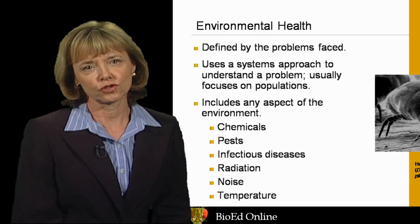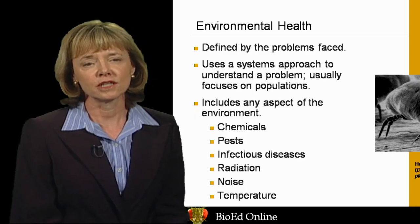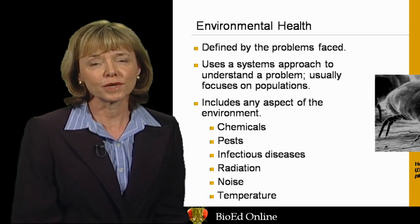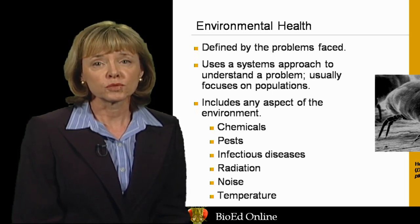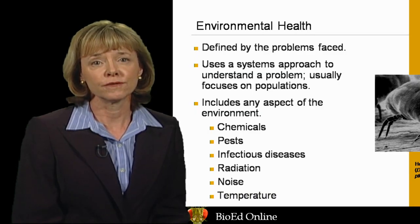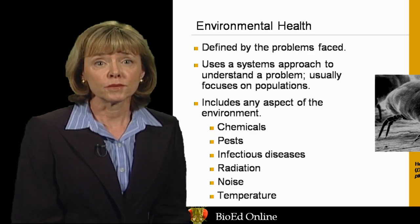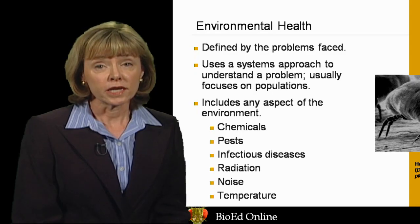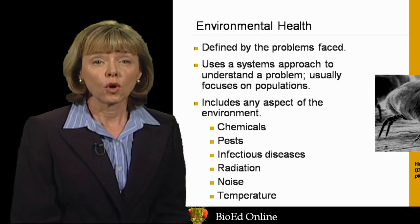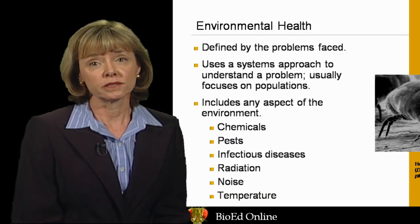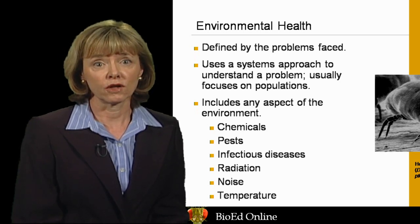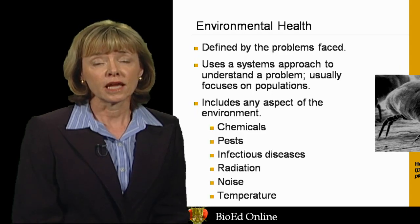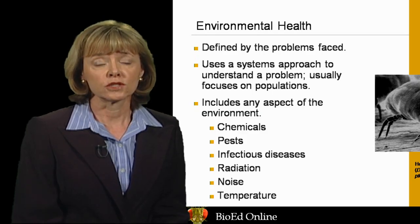The most obvious examples are the chemicals that surround us — there are more than 70,000 chemicals produced in the United States alone, and any one of these could have a negative health impact. But there are also pests in our homes, for example the dust mites that can be found in our bedding and upholstered material, or the dust produced by cockroach parts in many parts of the country. Infectious diseases can be considered an environmental health problem — for example, diseases spread by insects such as dengue fever or malaria. Radiation can come from natural sources such as radon in our homes or from man-made sources. Even noise can be considered a pollutant, and temperature is similar — rising water temperatures can affect the health of aquatic ecosystems.